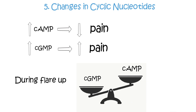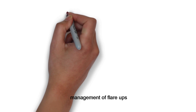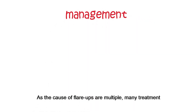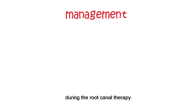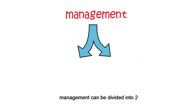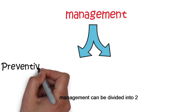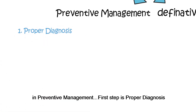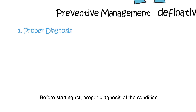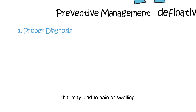Now let's move forward to the management of flare-ups. As the causes of flare-ups are multiple, many treatment options exist for the prevention and relieving of symptoms during root canal therapy. Management can be divided into two: first is preventive and second is definitive. In preventive management, the first step is proper diagnosis — before starting RCT, a proper diagnosis should be made to prevent incorrect treatment that may lead to pain or swelling.